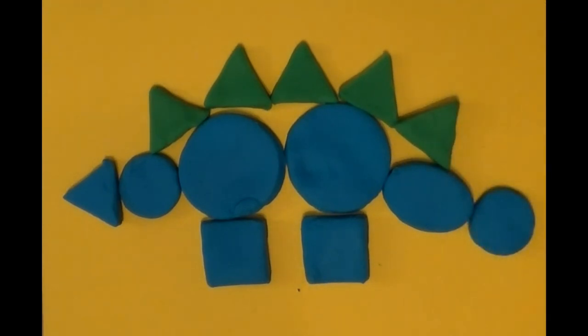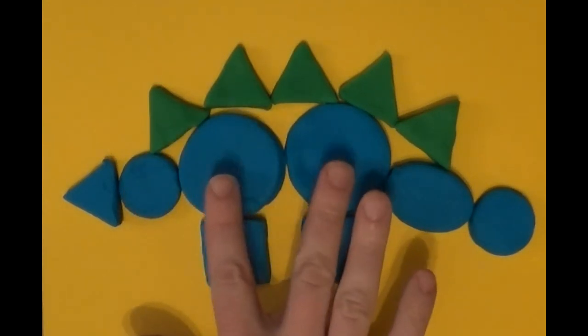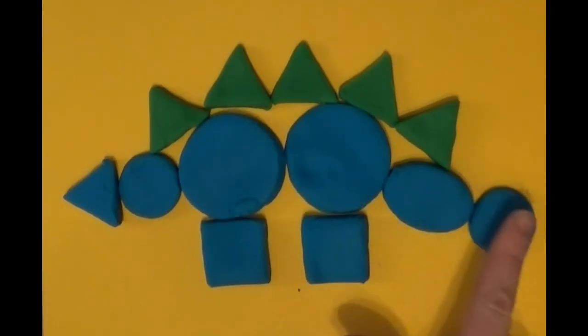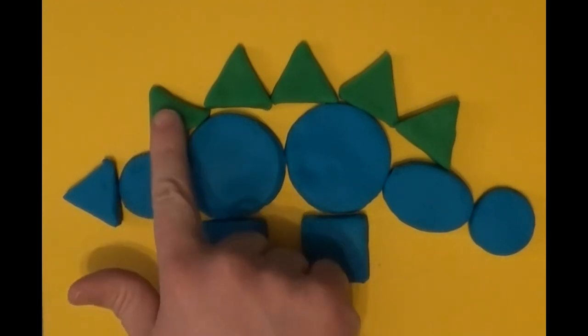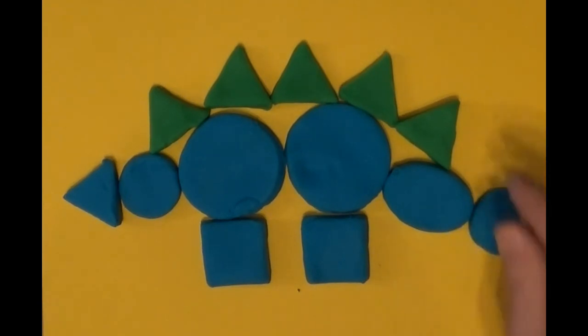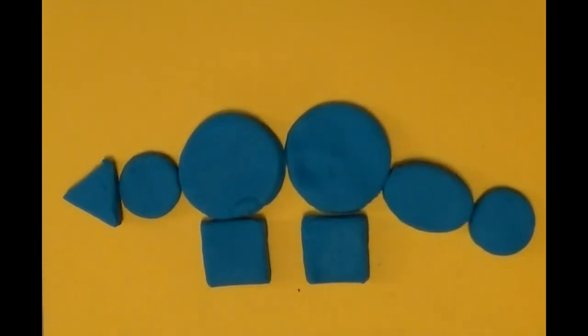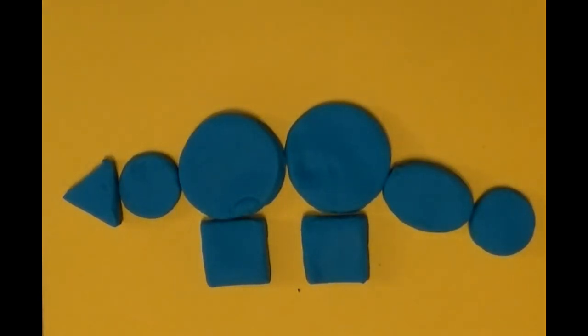I think we have a stegosaurus. So we made a stegosaurus using a triangle, a circle, two big circles, an oval, a circle, two squares, and then triangles for his plates. Who'd think that you could make a dinosaur using just simple shapes?